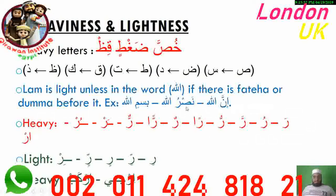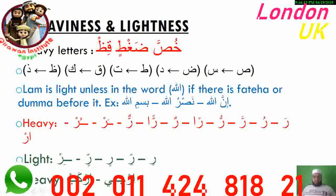To summarize the rule of Ra: Ra is heavy when there is Fatha or Damma, or the category of Fatha or Damma above it. If it has Sukoon, you check the letter before it — if it has Fatha or Damma, it's heavy. In all these cases of Fatha and Damma categories, Ra is heavy. It's light with the Kasra category. If there is Hamzat al-Wasl before the Ra, it will be heavy as well.